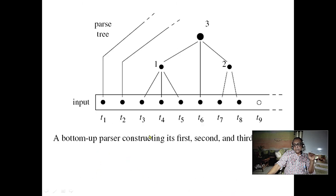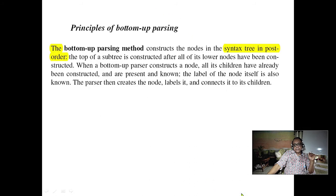Bottom-up parsing is the reverse: it tries to match rules starting from the right-hand side, reducing up toward the root. Bottom-up parsing constructs nodes in post-order. Unlike pre-order, the top of a subtree is constructed after all lower nodes have been built. When a bottom-up parser constructs a node, all its children are already present and known, and the level of the node itself is also known.